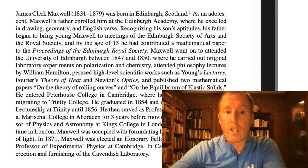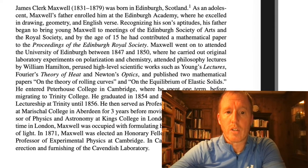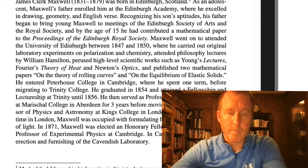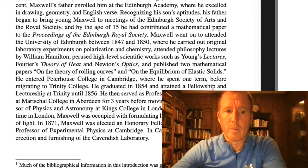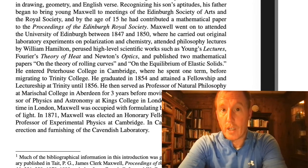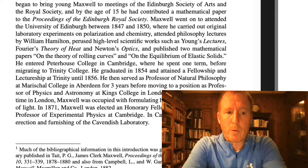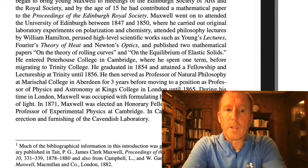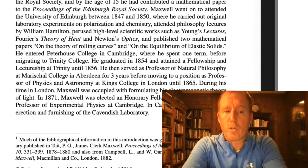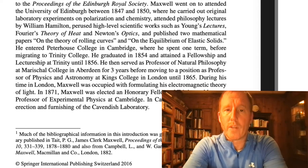Maxwell went on to attend the University of Edinburgh between 1847 and 1850, where he carried out original laboratory experiments on polarization of light and chemistry. He attended philosophy lectures by William Hamilton. He perused high-level scientific works such as Young's Lectures — we've read some of Young's lectures — Fourier's theory of heat, and Newton's optics. He also published two mathematical papers on the theory of rolling curves and on the equilibrium of elastic solids. He entered Peterhouse College in Cambridge, where he spent one term before migrating to Trinity College, graduating in 1854 and attaining a fellowship and lectureship at Trinity until 1856.